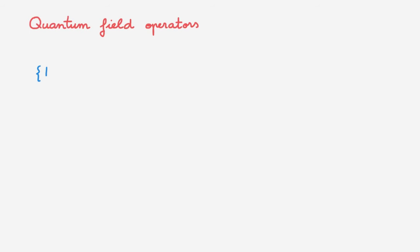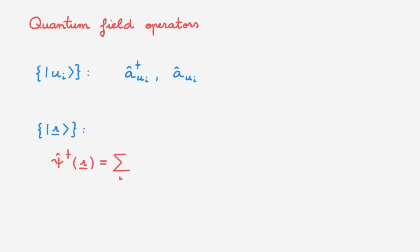Let's start with a refresher on quantum field operators. We start with discrete bases u and consider the associated creation and annihilation operators. Field operators are the creation and annihilation operators associated with the position representation. To build them, we consider the continuous position bases labeled by r, and the creation field operator is psi dagger of r, and we can write it in terms of the creation operators in the u basis.